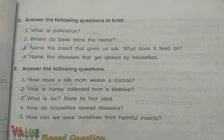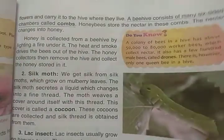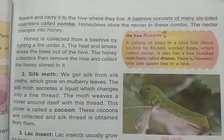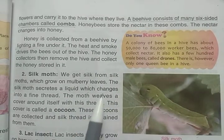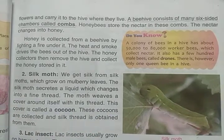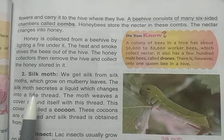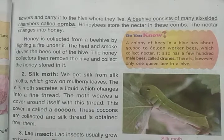How does the silk moth weave a cocoon? The silk moth secretes a liquid which, on contact with air, converts into a fine thread. Jose silk moth hai, wo ek liquid chhodata hai aur bahir aate hi wo fine thread ban jata hai. The moth then weaves a cover — the cocoon — around itself with this thread.